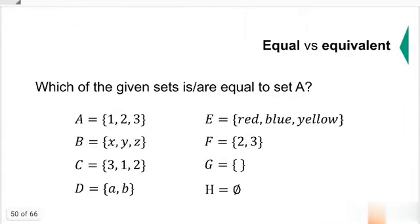Which of the given sets is or are equal to set A? This is set A. Which one is equal to set A? When we say equal, I should be able to find a set that also contains 1, 2, and 3, regardless of the order or how they are arranged inside. So you should have figured out that it's C. A and C are equal sets.